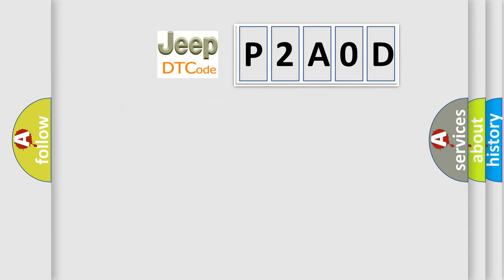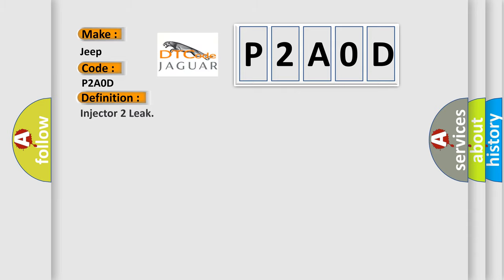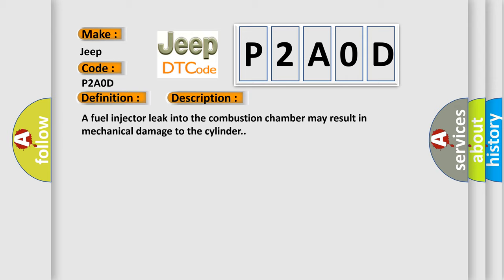So, what does the diagnostic trouble code P2A0D interpret specifically for Jeep car manufacturers? The basic definition is Injector 2 leak. And now this is a short description of this DTC code: A fuel injector leak into the combustion chamber may result in mechanical damage to the cylinder.